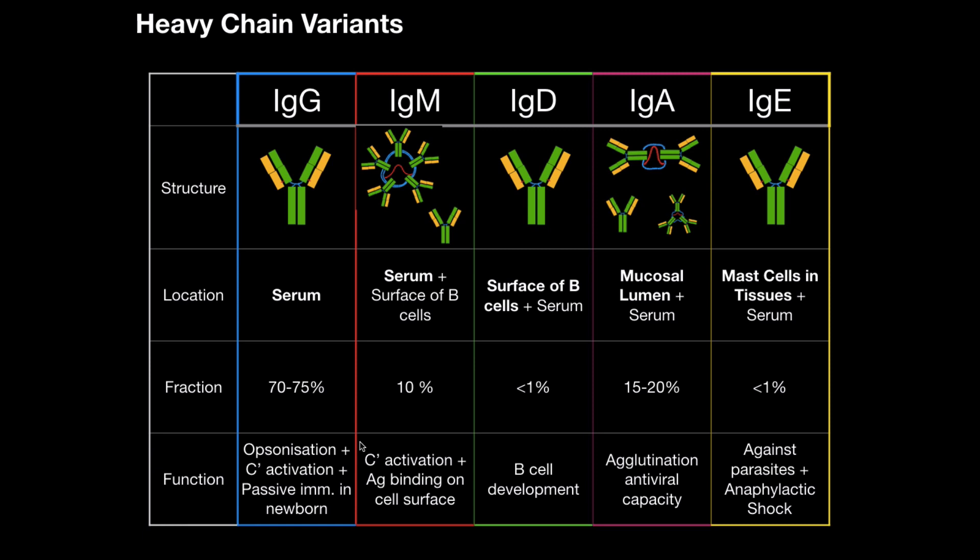IgD, on the other hand, those exist as monomers. It's logical because you'll mostly find them on the surface of B cells. But you'll also find some of them in the serum under 1%. And they come from B cell development, and their role is also related to B cells as well.